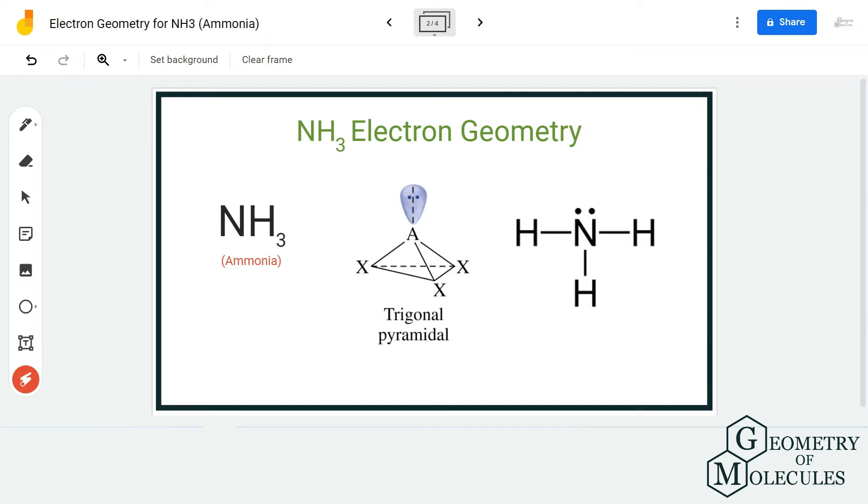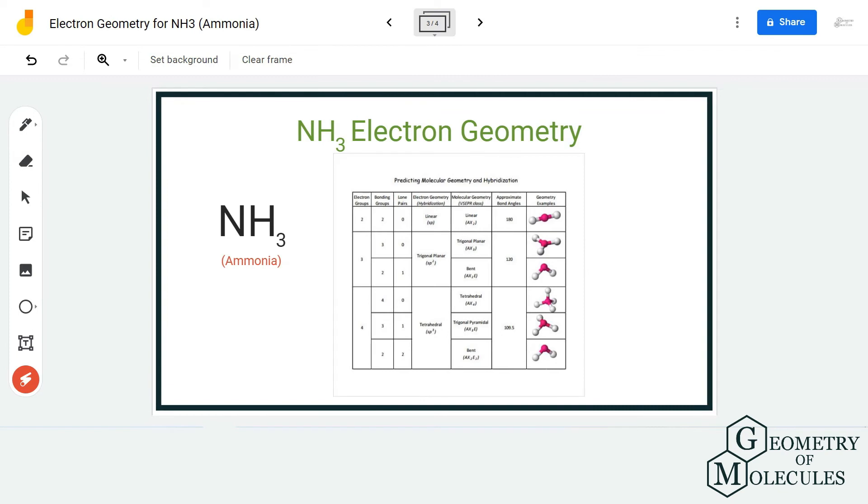But that is the molecular geometry. Here we are talking about the electron geometry. As you can see, there are four electron regions over here because there are three hydrogen atoms and there is one lone pair of electrons. So there are four electron regions over here.